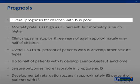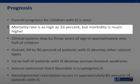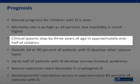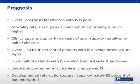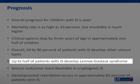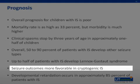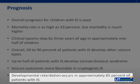Prognosis. Overall prognosis for children with infantile spasms is poor. The overall mortality rate is as high as 33%, but morbidity is much higher. Clinical spasms stop by three years of age in approximately one-half of children with IS and rarely persist after five years of age. Hypsarrhythmia also tends to resolve with maturation. Overall, 50% to 90% of patients with infantile spasms develop other seizure types, and up to half of patients with IS will develop Lennox-Gastaut syndrome. Seizure outcomes are more favorable in cryptogenic versus symptomatic infantile spasms and in those with earlier onset of their spasms. Developmental retardation occurs in approximately 85% of patients with infantile spasms. There is little information available on very long-term outcome of children with IS.